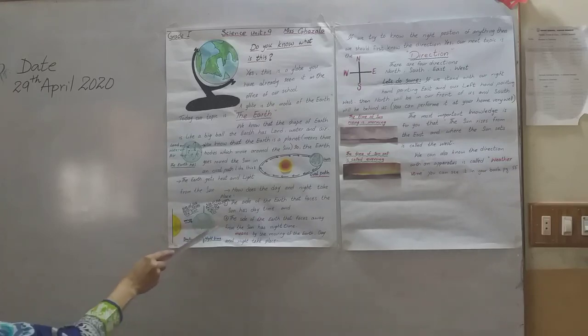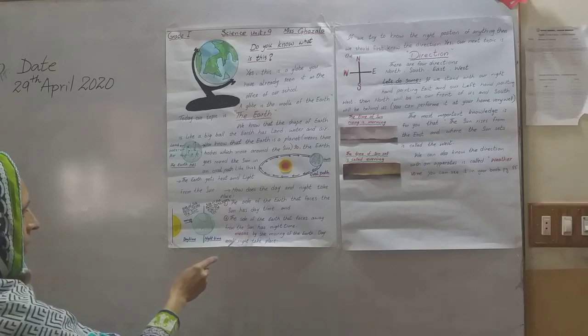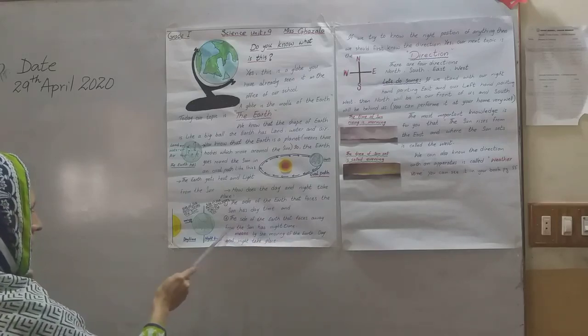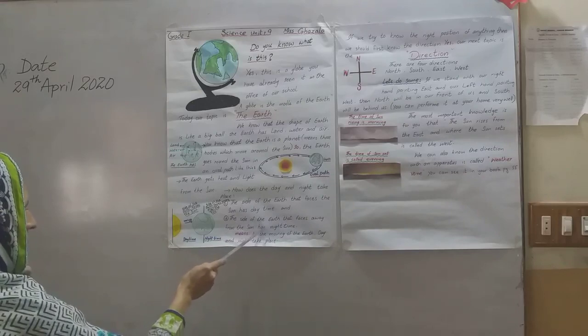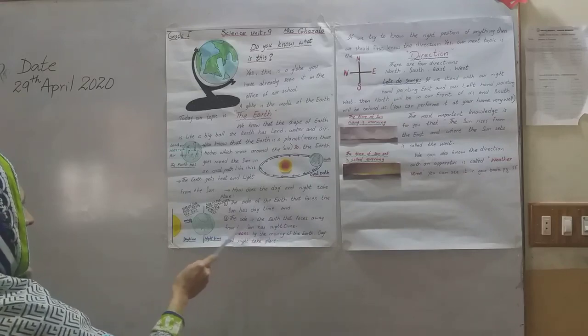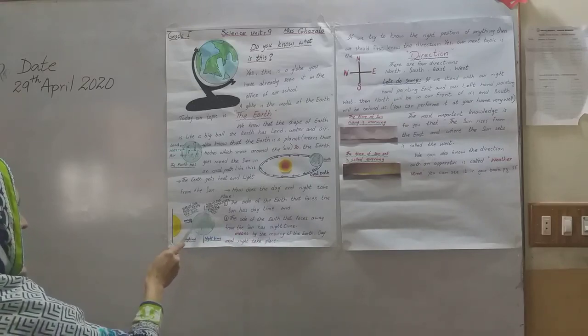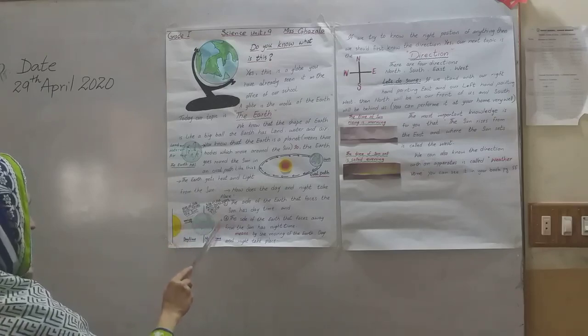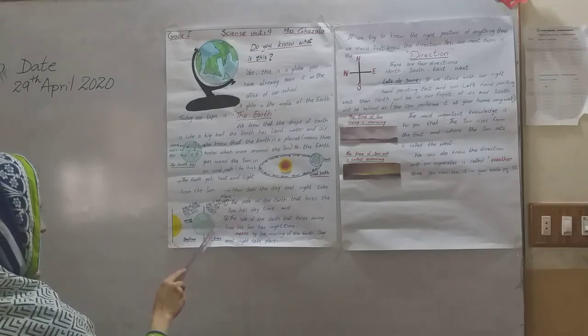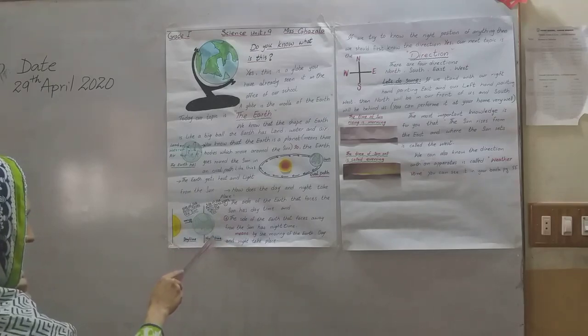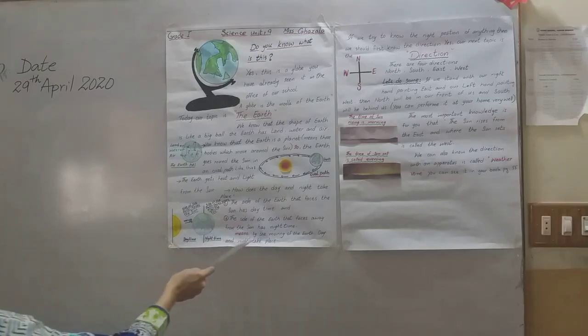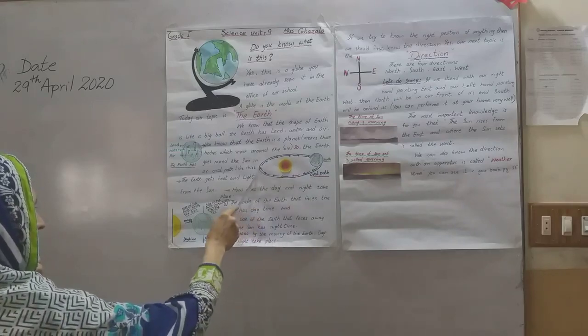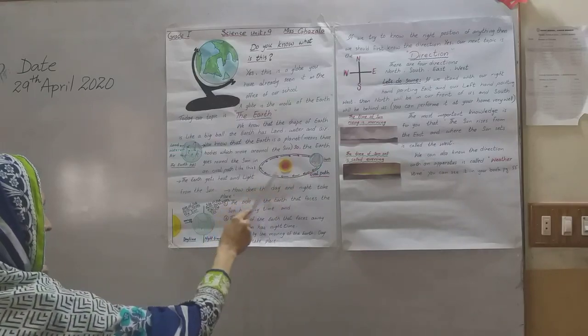Number 2: The side of the earth that faces away from the sun has night. Like here, the side of the earth faces away from the sun has night. Means, by the moving of the earth, day and night take place.